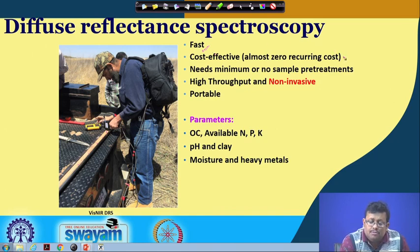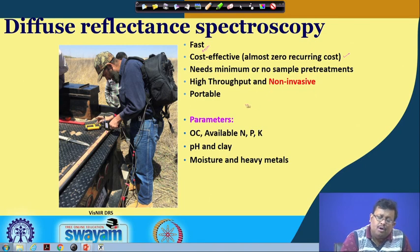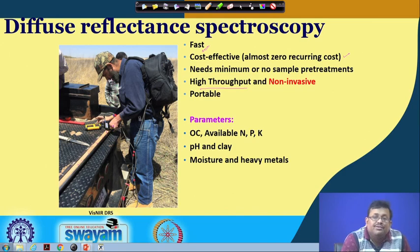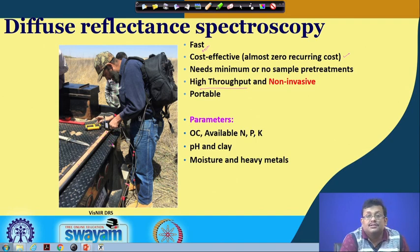It is cost effective — almost zero recurring cost as it runs through battery, requiring no consumables or caustic chemicals. It is high throughput and non-invasive. High throughput means you can take a scan and save a spectrum of a particular sample, and that spectrum can be used to predict multiple soil properties from a single scan. Non-invasive means it does not destroy the soil — you can still use the sample for further analysis.